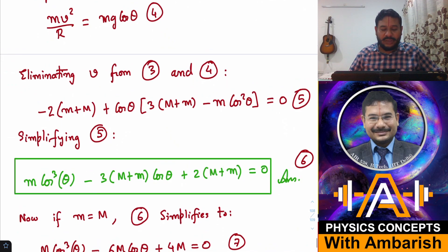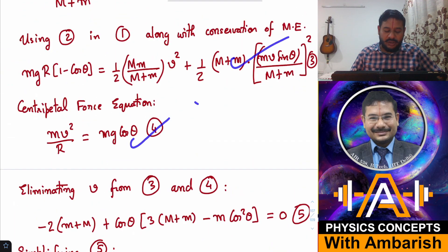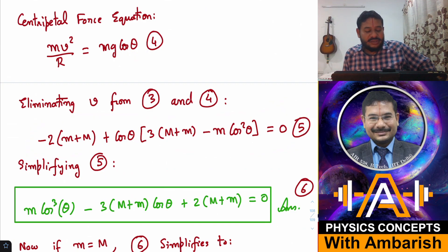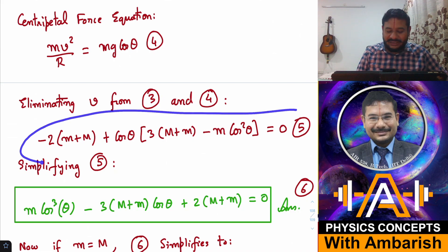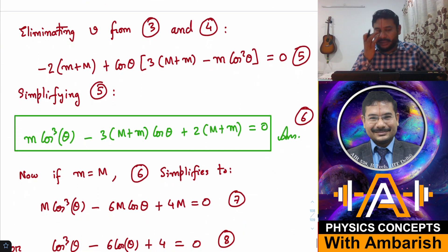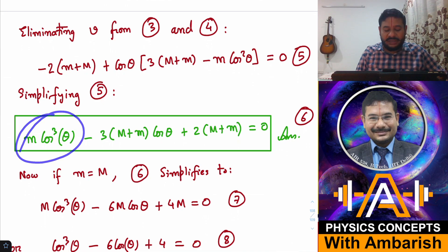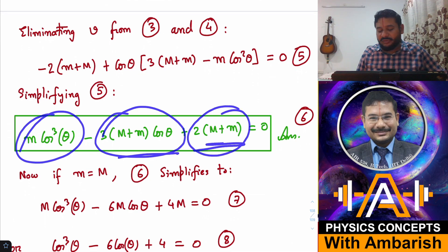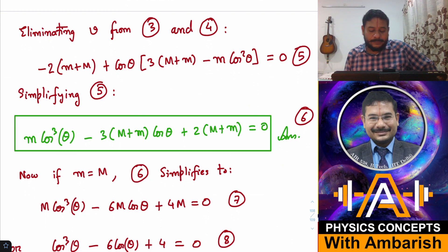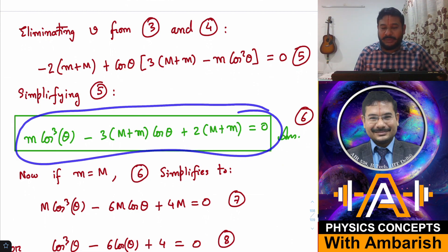If you eliminate V in equations 3 and 4, you get this equation. There is only cos theta which is unknown, and I can simplify this more and rearrange it in proper polynomial form. I get a polynomial in cos theta. It's a cubic in cos theta: m(cos θ)³ - (3M+m)cos θ + 2(M+m) = 0. This is our answer to the first part of the Harvard problem.